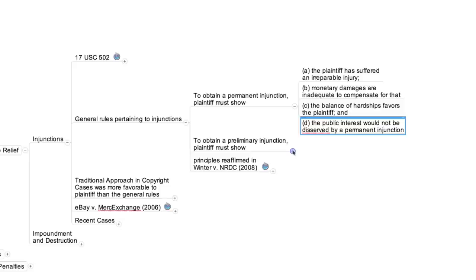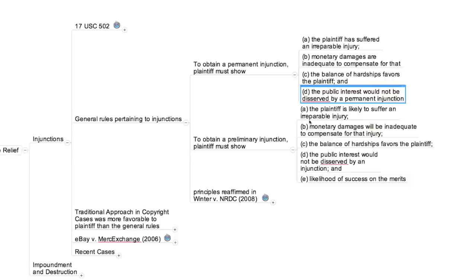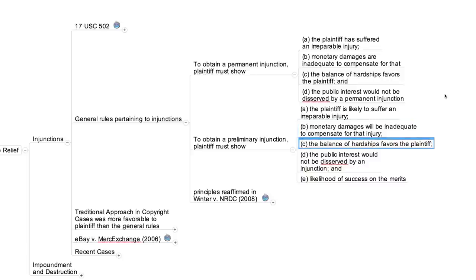The traditional rules governing preliminary injunctions were slightly different. To obtain one of these, the plaintiff was obliged to show: first, that she is likely to suffer an irreparable injury if the defendant's conduct continues; second, that monetary damages would be inadequate to compensate her for that injury; third, that the balance of hardships tilts in her favor; fourth, that the public interest would not be disserved; and last but not least, that she is likely, at the conclusion of the lawsuit, to succeed in demonstrating the illegality of the defendant's behavior.